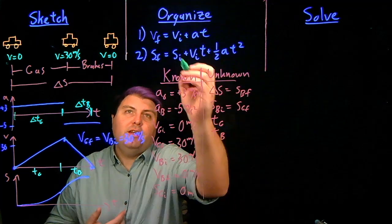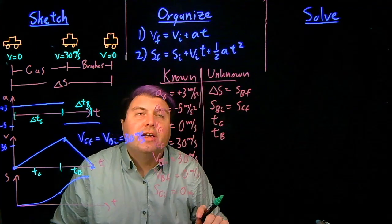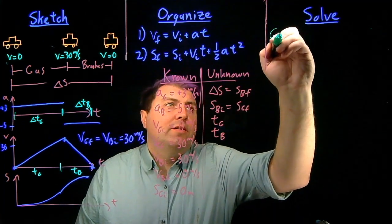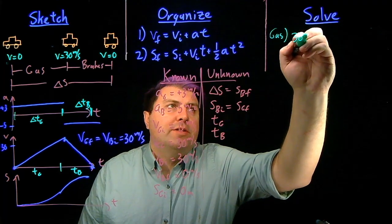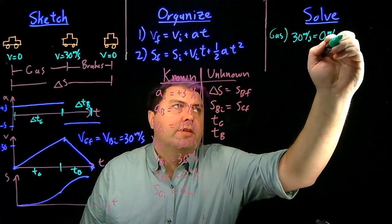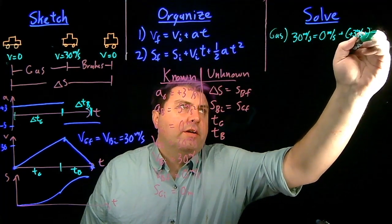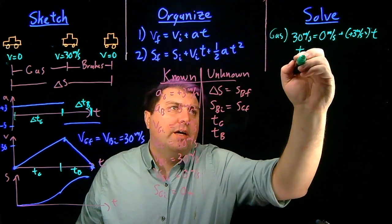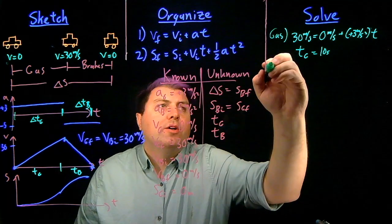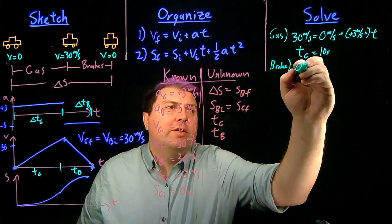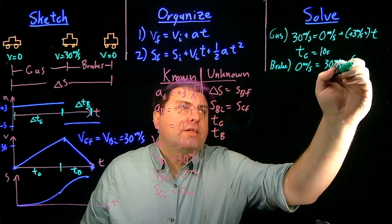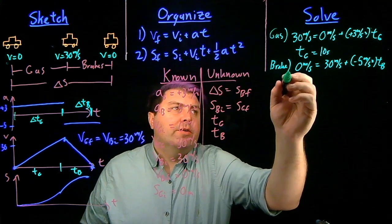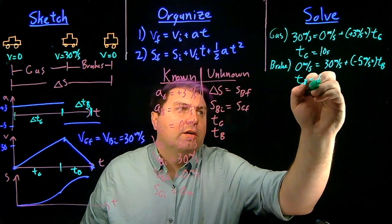So we want to find the time. And looking here, we have final velocity, initial velocity, acceleration, and not the time. So we can solve for the time for both the gassing and the braking. For the gassing, we know that our final velocity is 30 meters per second. Our initial velocity is zero meters per second. Our acceleration is plus three meters per second squared times time. We can divide 30 meters per second by three, and we get the time to gas is 10 seconds. While we are braking, we have zero meters per second equals 30 meters per second plus negative five meters per second squared times time to brake. If we bring this over and then divide by five, we get the time to brake is six seconds.